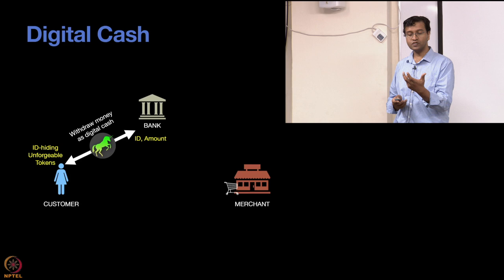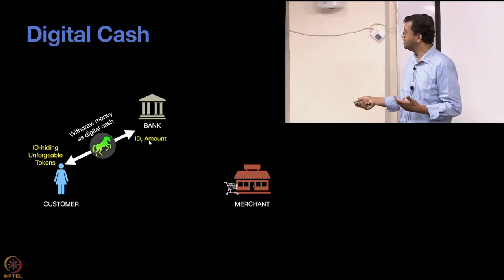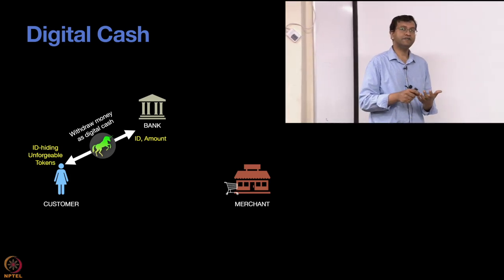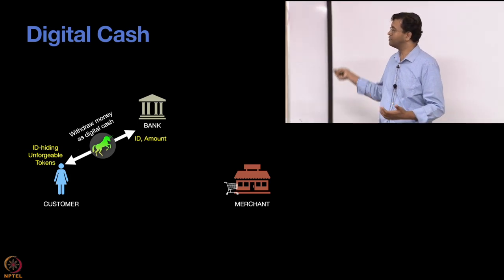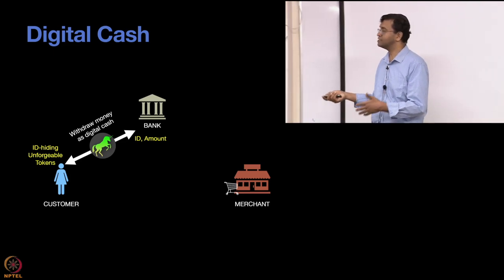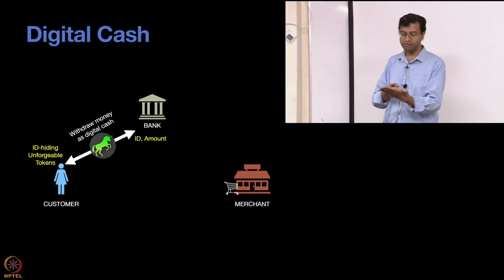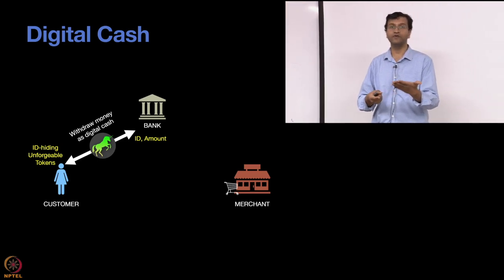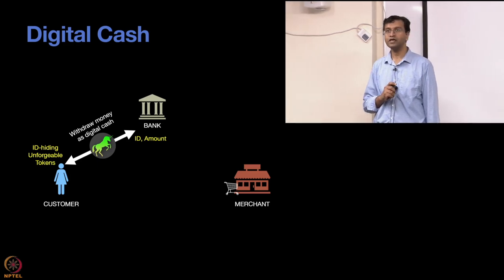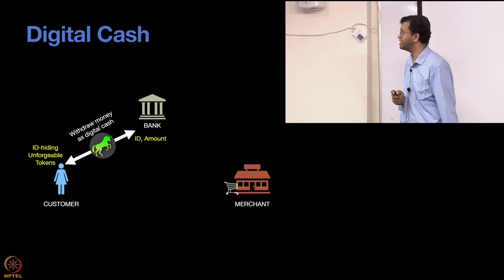If you look at that token, it doesn't reveal the customer's ID. Because if the token had that ID in it, it defeats the purpose again — when that token eventually gets deposited back, the bank will know the merchant deposited this token and will see this person's ID. So the ID is not there in the token — well, it's kind of there but in a hidden form, and we'll see why it needs to be there.